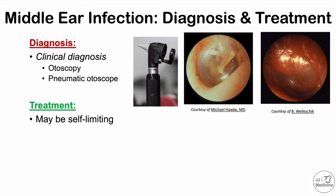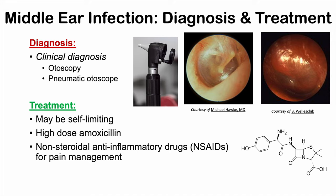Most often this condition may be self-limiting, so some clinicians will practice a watch-and-wait approach. However, in cases where there is a higher fever, other symptoms are involved, it's taking longer to resolve, or the patient is younger than six months, a high dose of amoxicillin may be used. NSAIDs can be used for pain management — medications like ibuprofen or Advil.